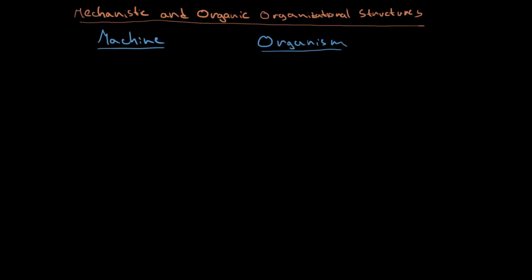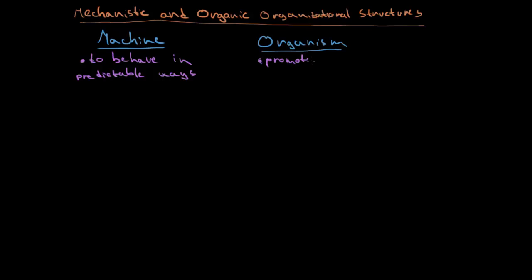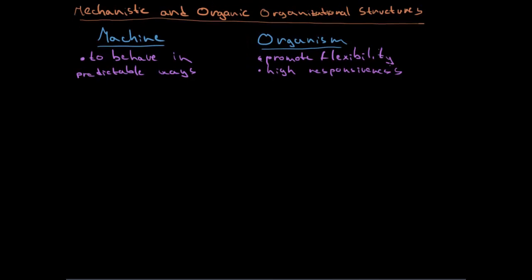Mechanistic organizational structures are made to promote or induce people to behave in predictable ways — predictable or accountable. On the other hand, organic organizational structures are made to promote flexibility, so that people can have high responsiveness.